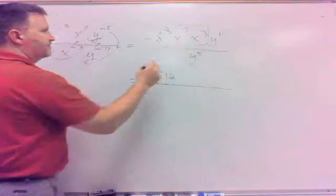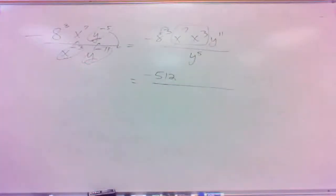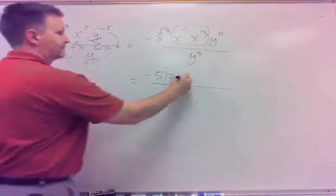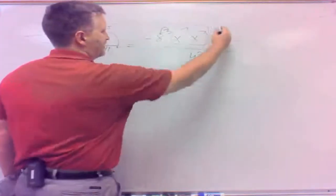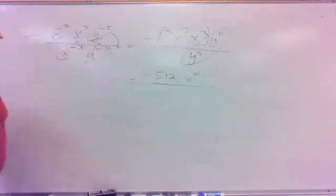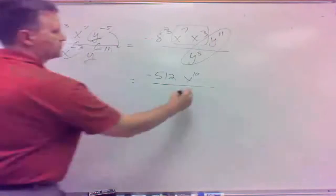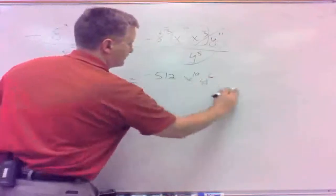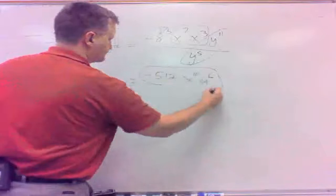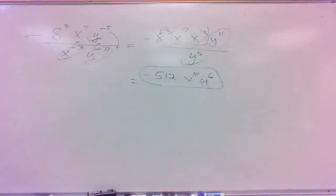Now, the x's, we have the same base, but they're multiplied, so that is add. Then we're back to the y's being divided, so that is subtract. So I wind up nothing on the bottom. Negative 512 x to the 10th, y to the 6th.